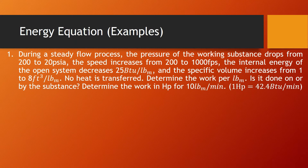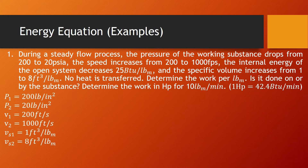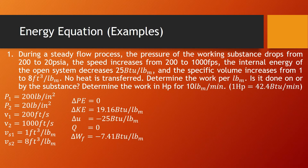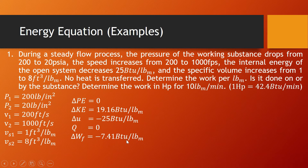For the first example, this is a continuation from our previous video where we already solved for the different forms of energy. These are the given values and solved energy changes: the change in potential energy is zero since there is no elevation change. The change in kinetic energy is 19.16 BTU per pound mass. The change in internal energy is negative 25 BTU per pound mass. Heat is zero since there is no heat transferred. The change in flow work is negative 7.41 BTU per pound mass.